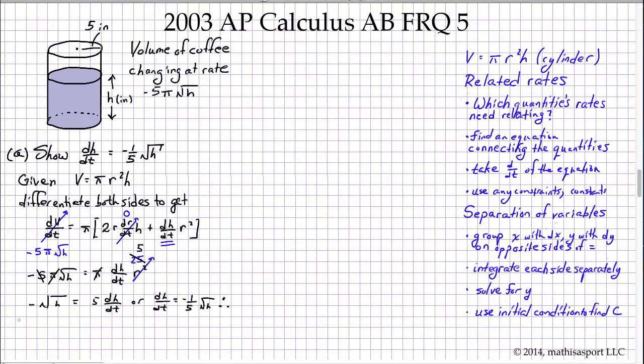And that's a challenging question. Let's go on to part (b). Now we have to solve a differential equation using the technique of separation of variables. So we start by separating variables, and we take this formula that we've just derived, which is given to us, and we try to get all of the h-related terms on the left and all of the t-related terms on the right. So we have dH/√H equals -1/5 dt.